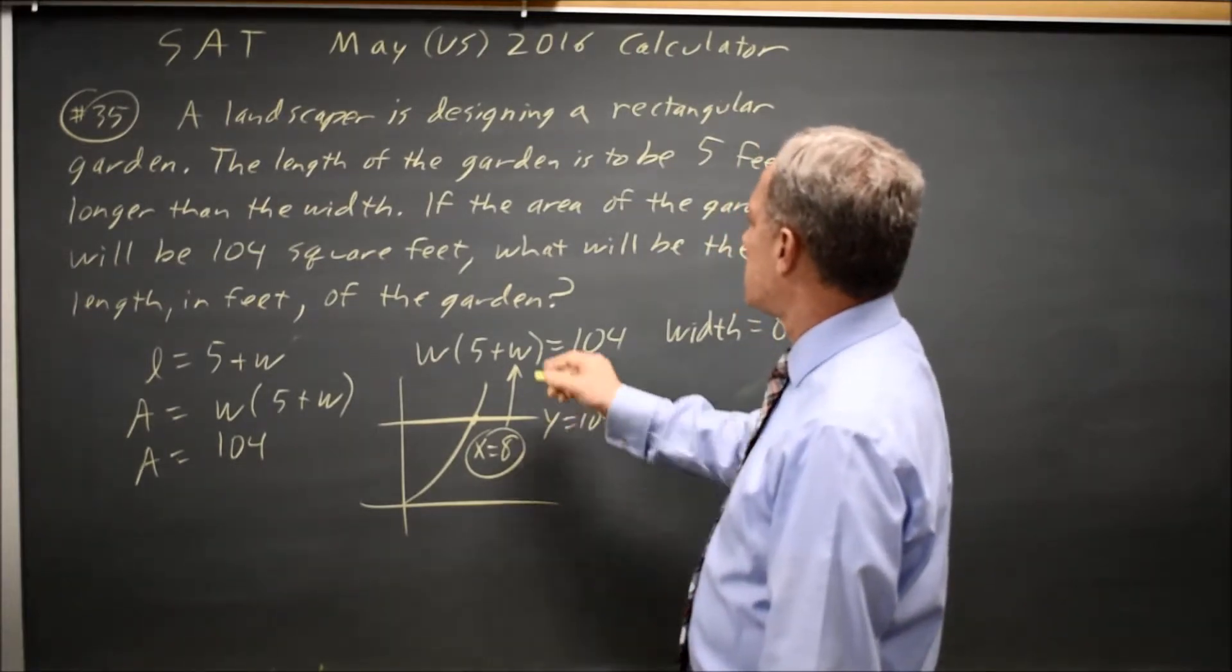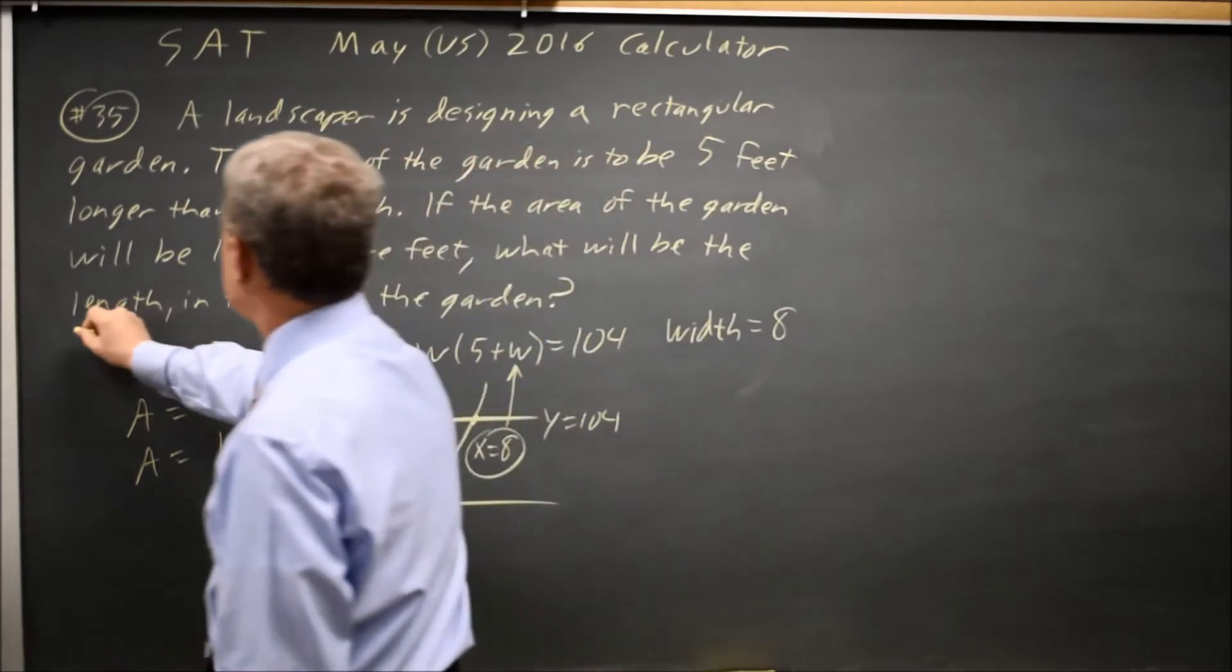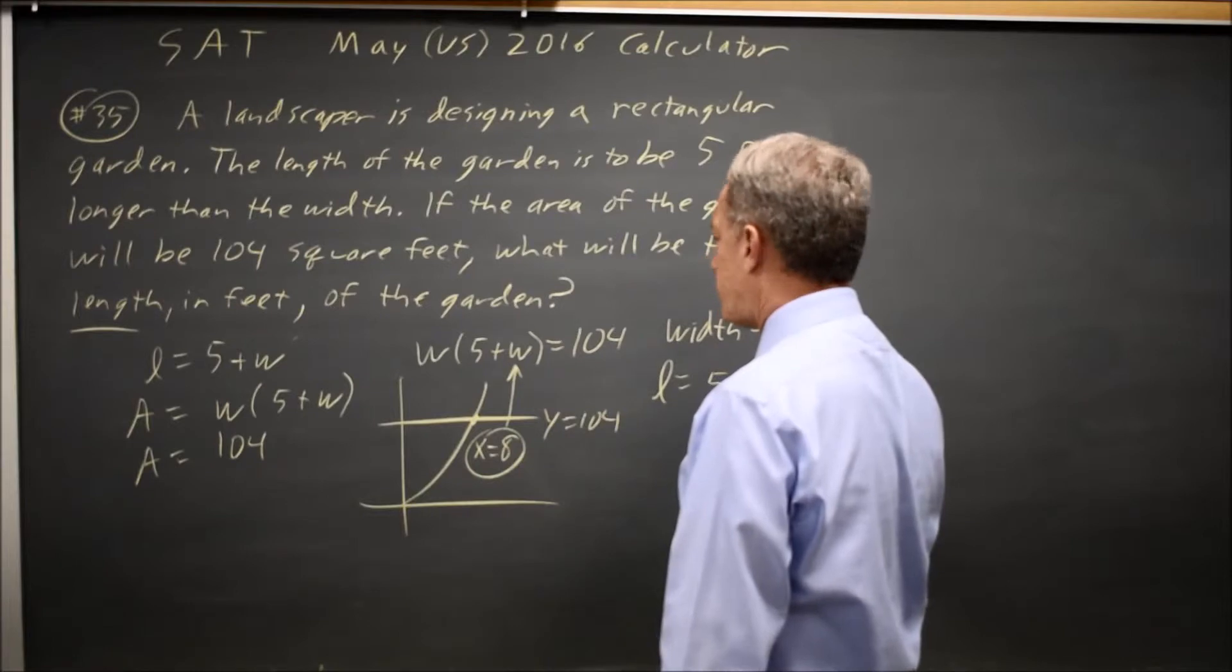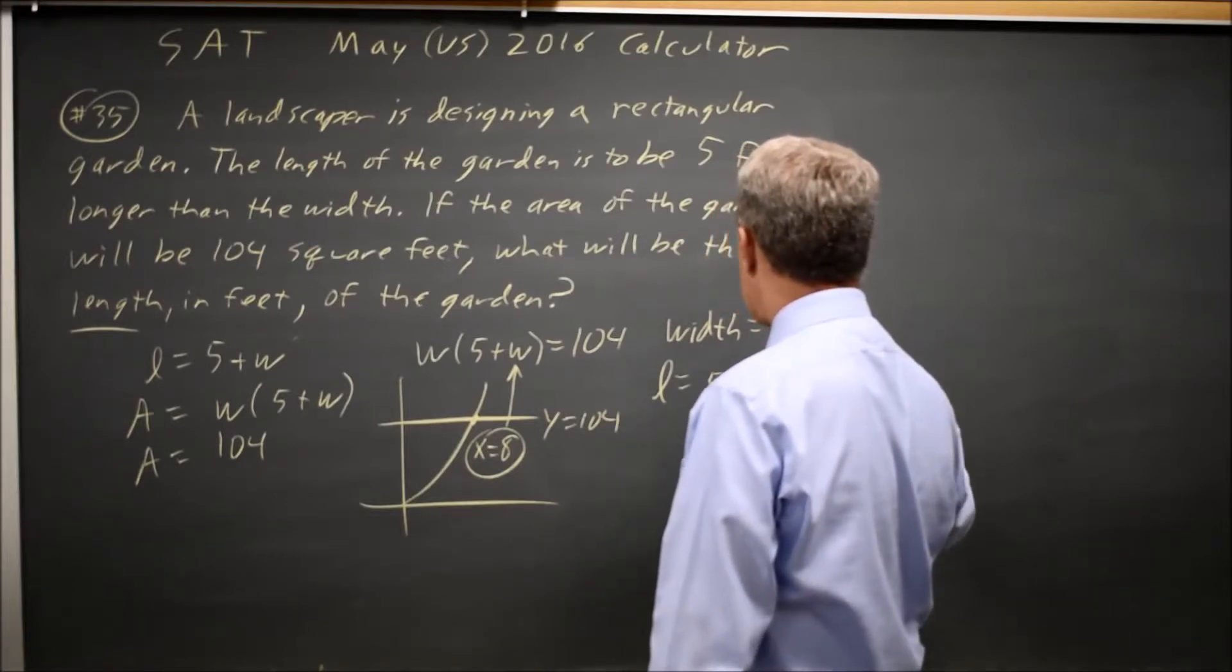But they're not asking for the width. The question is, what is the length in feet? And the length is 5 plus W, which is 5 plus 8 equals 13, and that would be the answer.